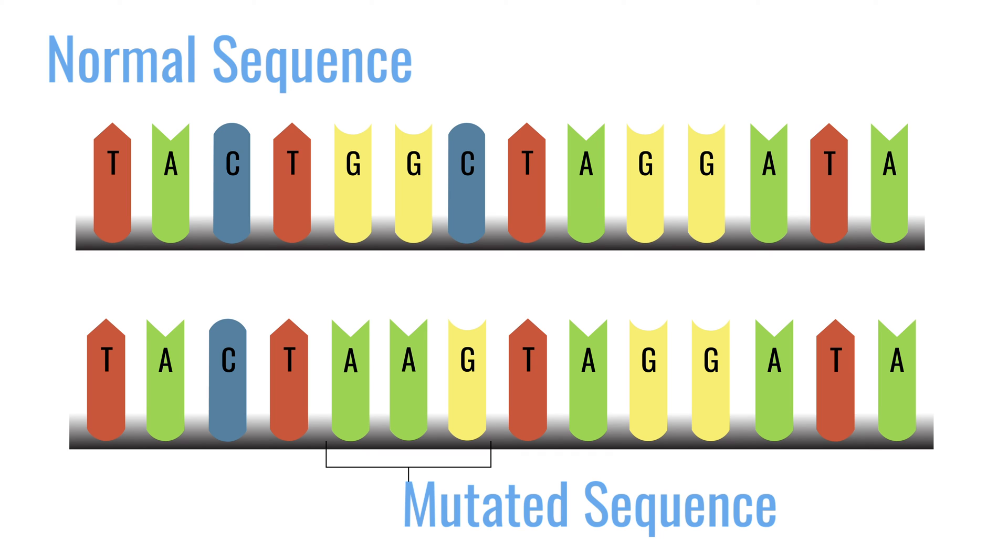Sometimes it's not practical or cost-effective to sequence the normal DNA from the same person, so findings are based on the frequency of any given change. If a change has never been seen in a normal person before, you can assume it's probably in the tumor.